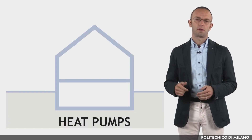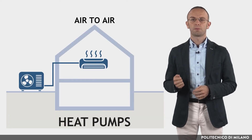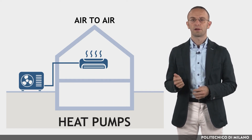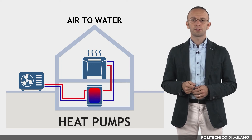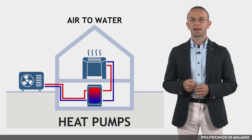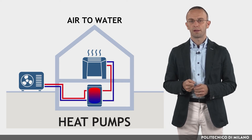In general, depending on the fluid used to condense the refrigerant and the fluid cooled by the internal evaporator coil, there may be four types of heat pumps. Air-to-air: the refrigeration machine directly cools the room air through an evaporator and transfers heat to the external environment by means of an air-cooled condenser. Air-to-water: the refrigeration machine cools the room air directly and transfers heat to the external environment by means of a water-cooled condenser.